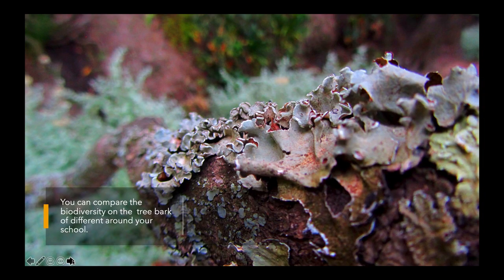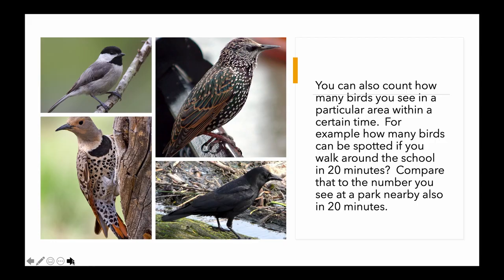Using Simpson's Biodiversity Index, you can compare biodiversity on tree bark across different trees around your school. You can also count how many birds you spot in a particular area over a set time — for example, walking around the school for about 20 minutes — and compare that to the number seen in a nearby park in the same time. Simpson's Biodiversity Index is an excellent way of quantifying biodiversity, giving us a number to help quantify what we know intuitively.